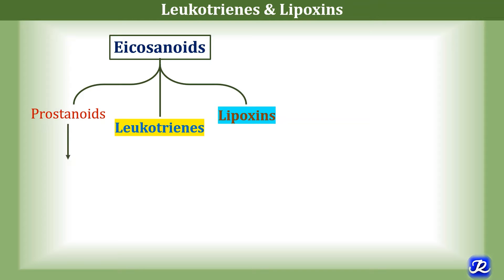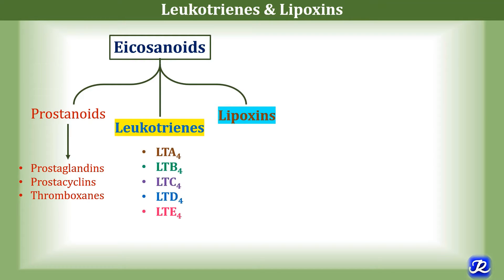In the previous video, we studied about prostanoids, i.e. prostaglandins, prostacyclins and thromboxins. Examples of leukotrienes are leukotriene A4, B4, C4, D4 and E4. And lipoxins are lipoxin A4 and lipoxin B4.